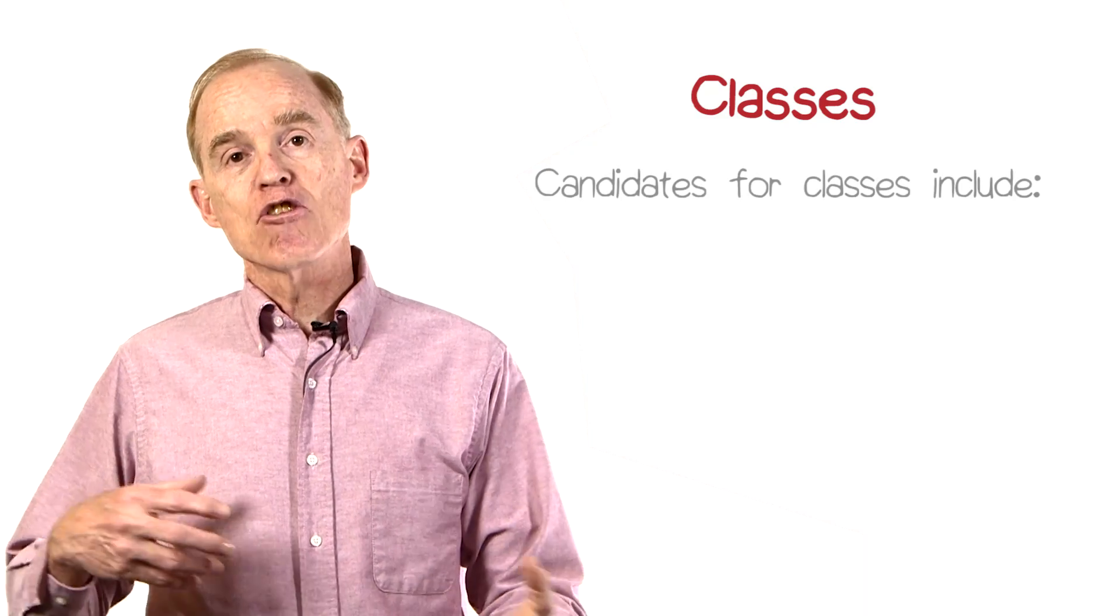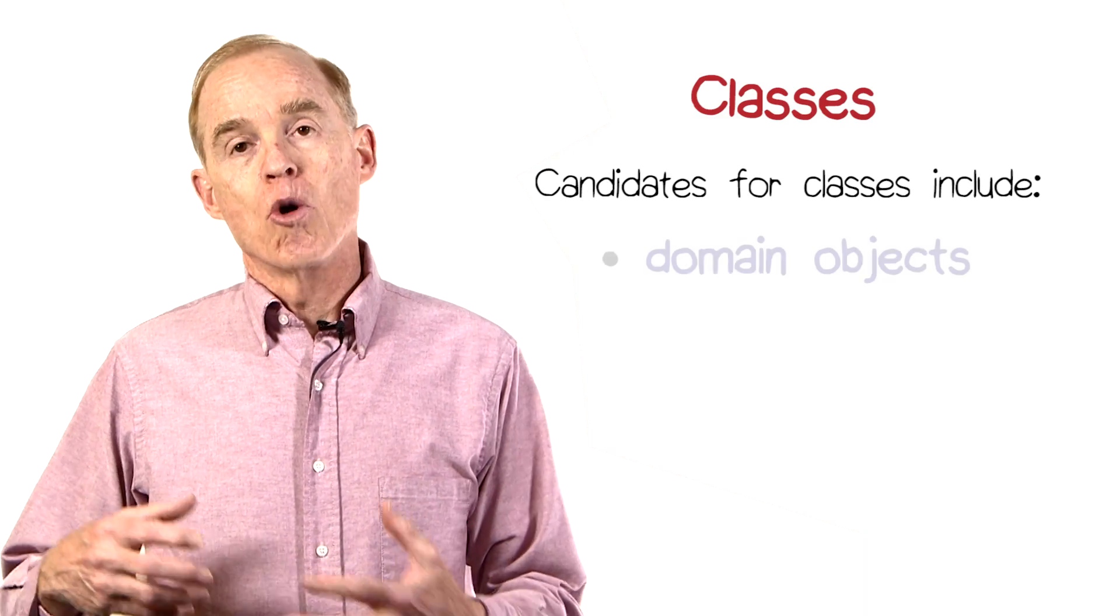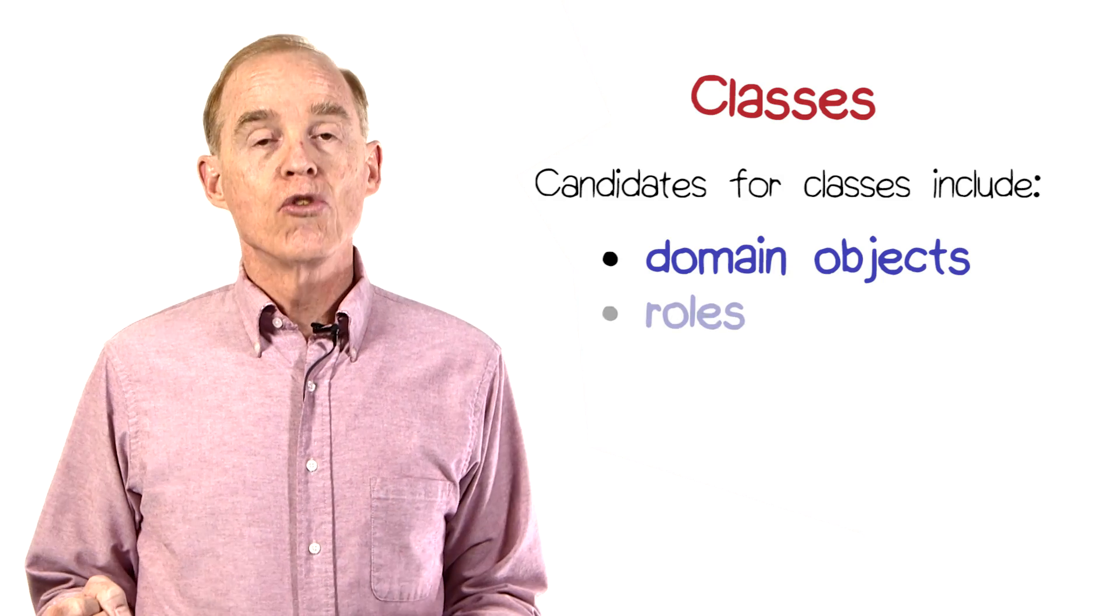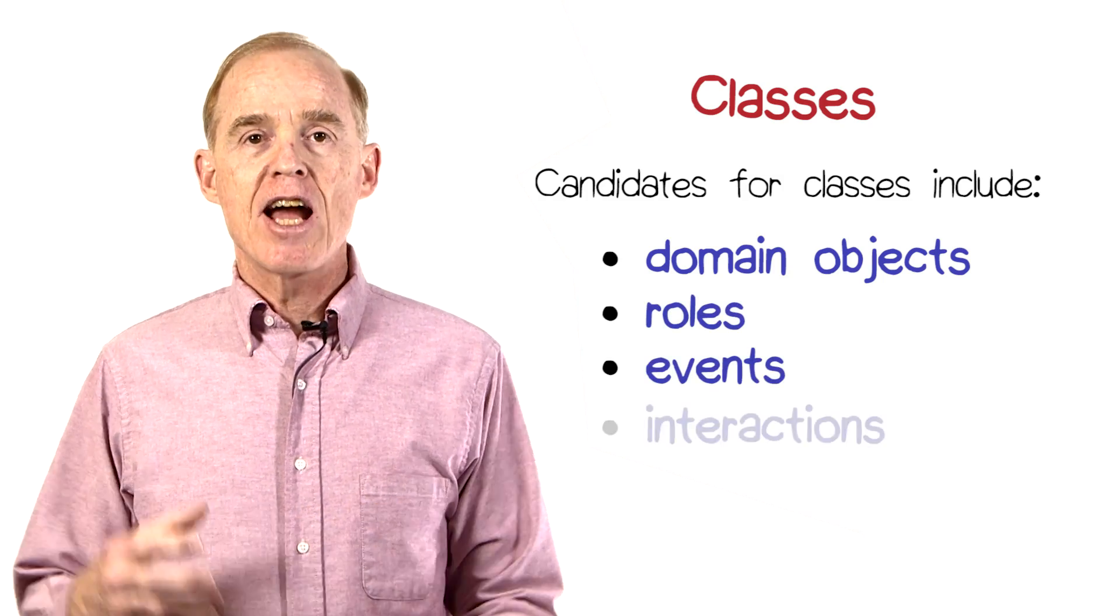A class in UML, or in an object-oriented language, is a description of a similar set of instances. Candidates for classes include domain objects, roles, events, and interactions.